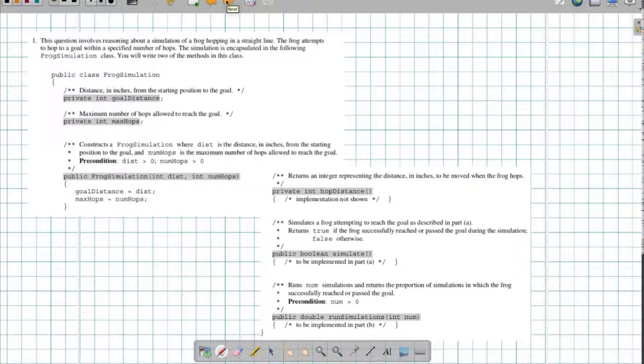Problem 1 says the question involves reasoning about a simulation of a frog hopping in a straight line. The frog attempts to hop to a goal with a specified number of hops. The simulation is encapsulated in the following frog simulation class, and we'll write two of these methods. We're going to end up writing the simulate method here, and we're going to be writing the run simulations method here.